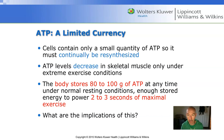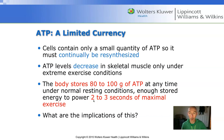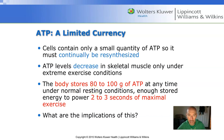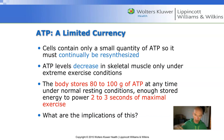How fast does our stored ATP get used up? We only store enough ATP to power about two to three seconds of maximal exercise — that's about 80 to 100 grams in our entire body. The variance depends on body size: the larger somebody is, the more ATP their cells store simply because they have more cells. Either way, it's a very small amount.